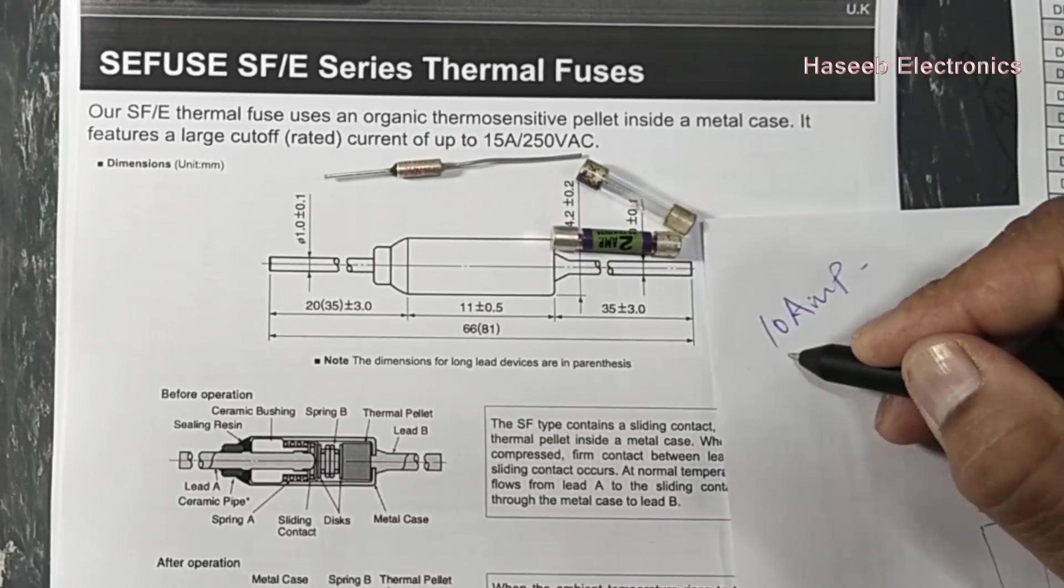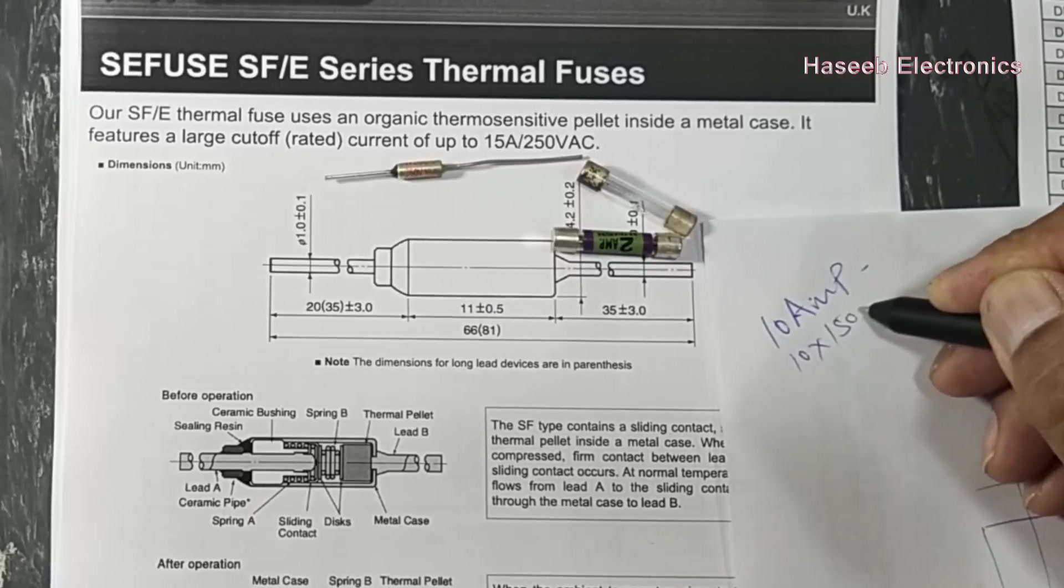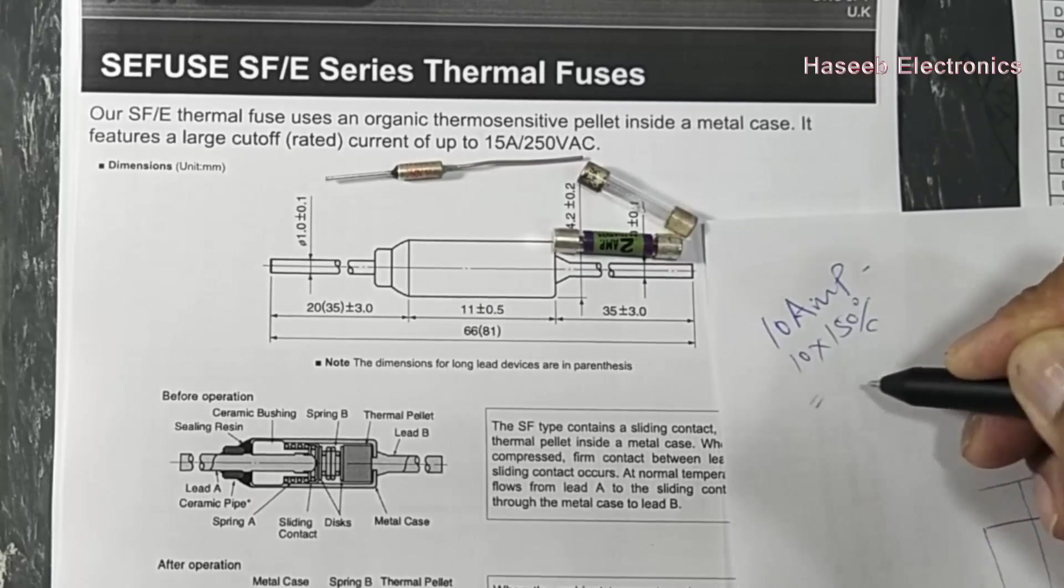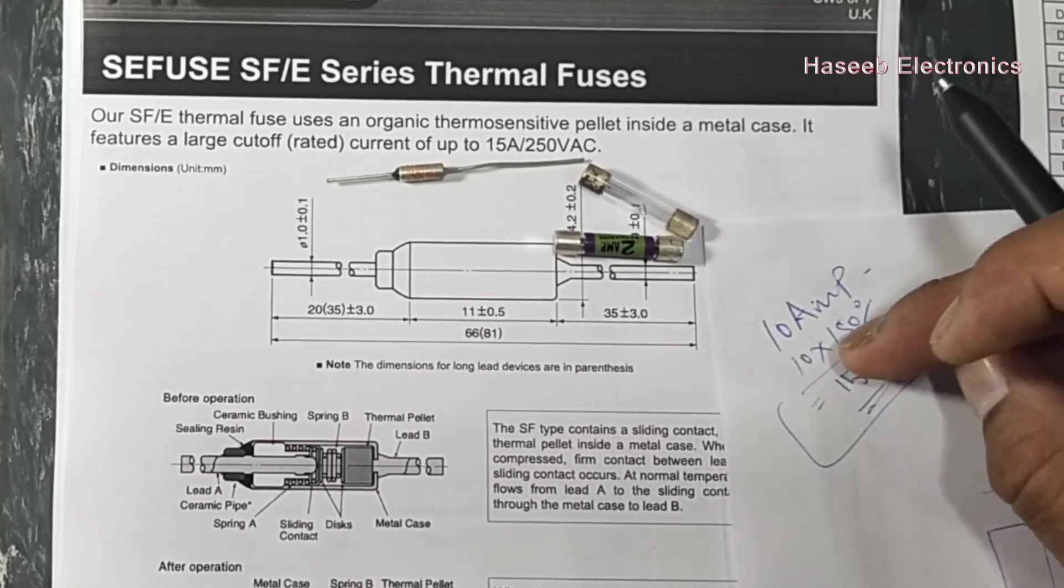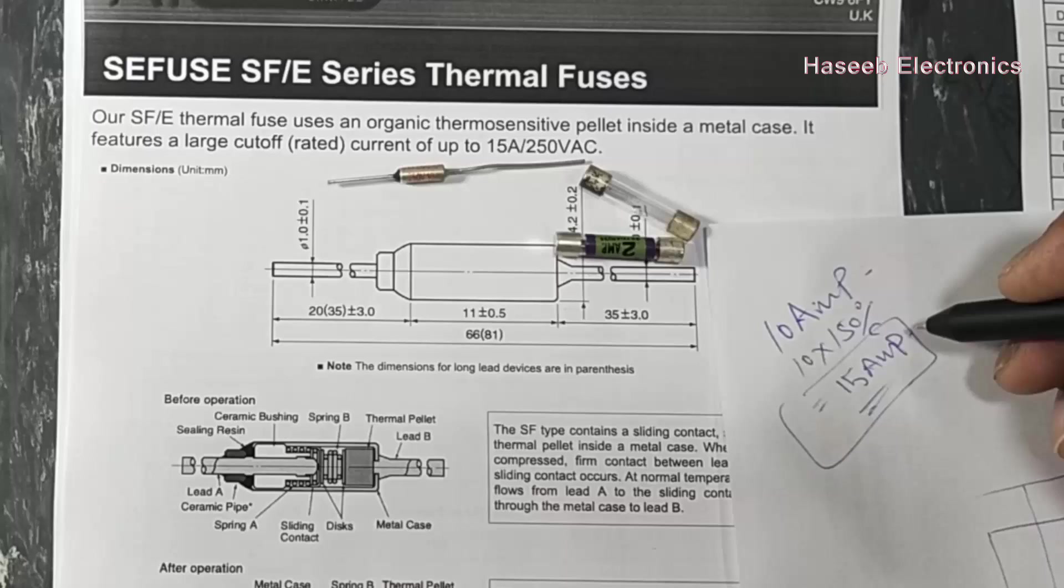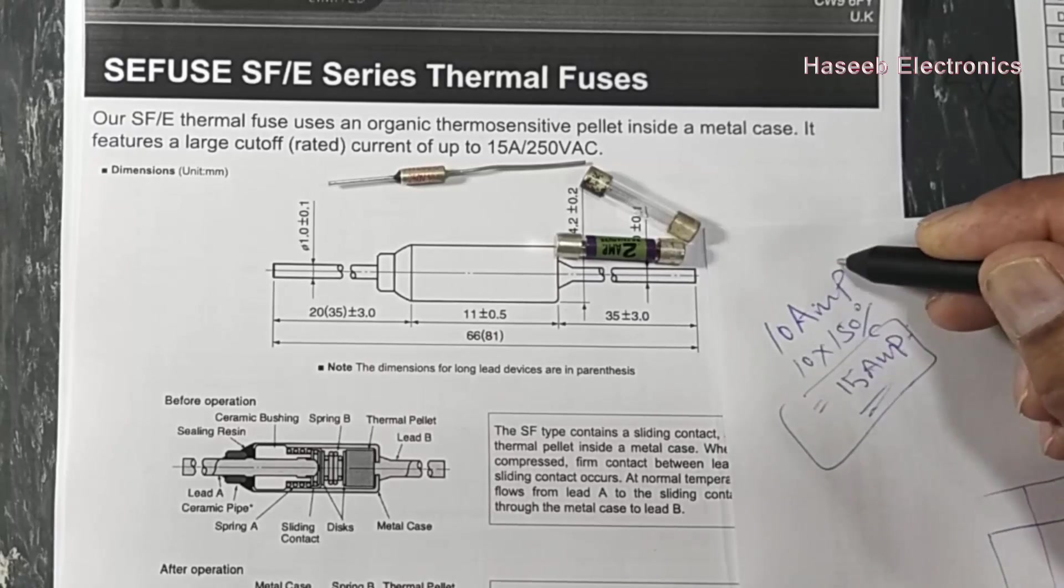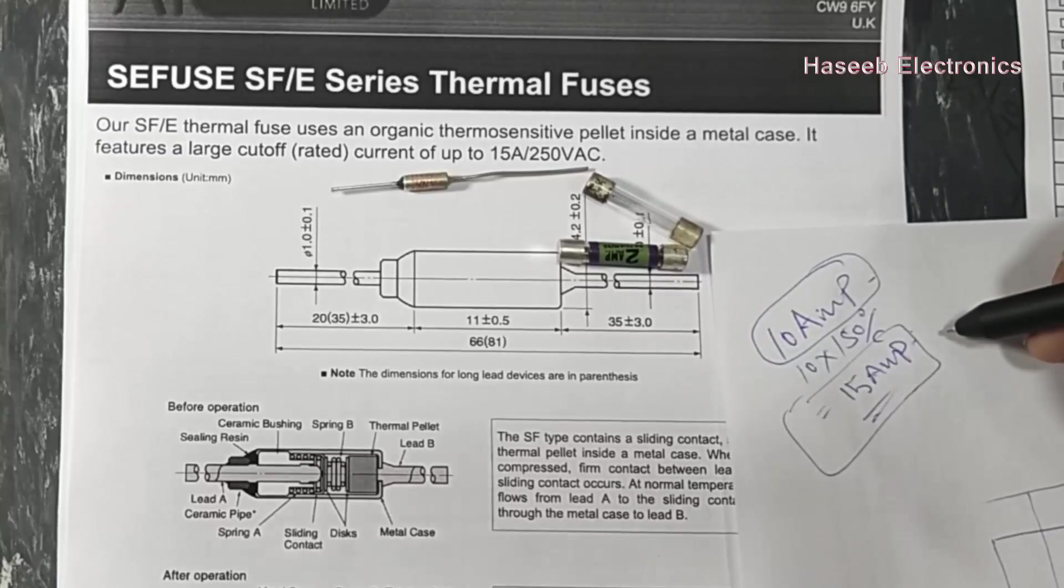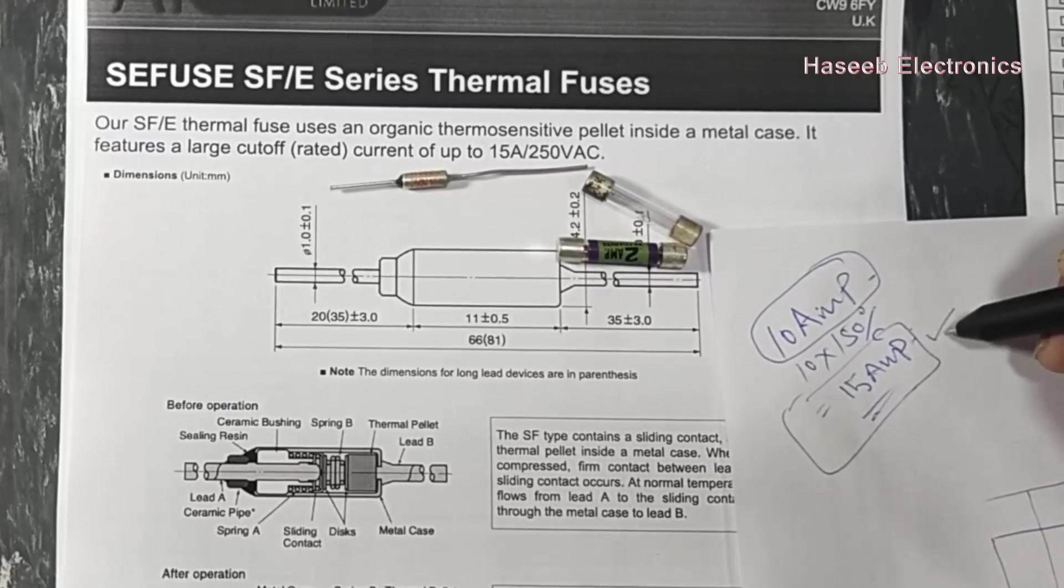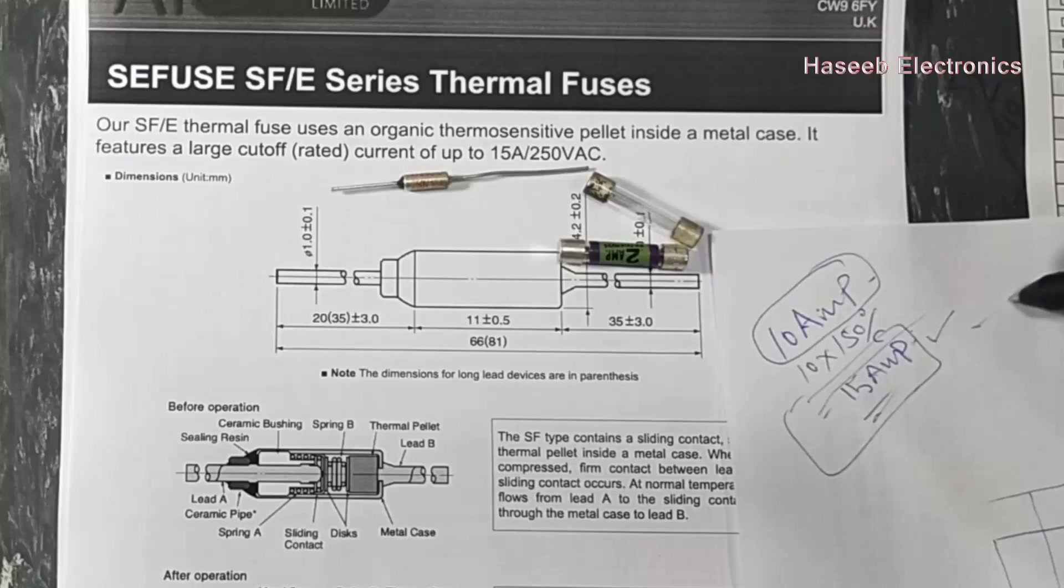10 ampere current to 10 into 150 percent, we can say it will be 15 ampere. This will limit the current and it will protect the circuit. When the maximum operating current is 10 ampere, the fuse will be selected for 15 ampere, and at 15 ampere this circuit will be protected.